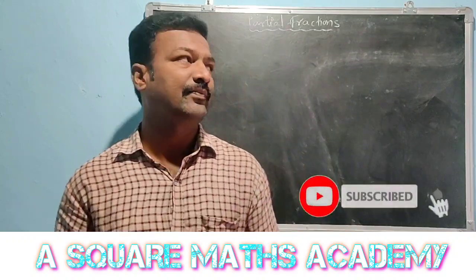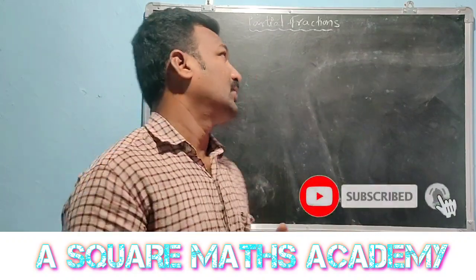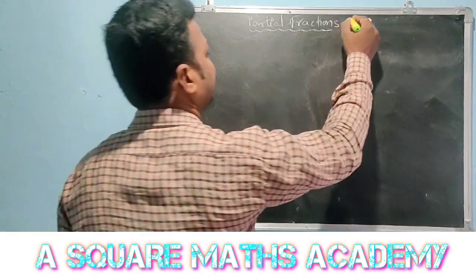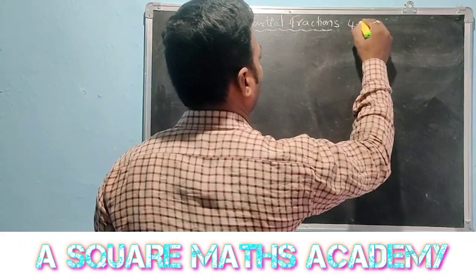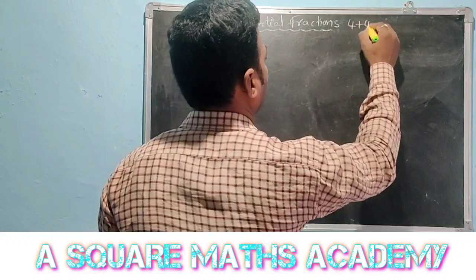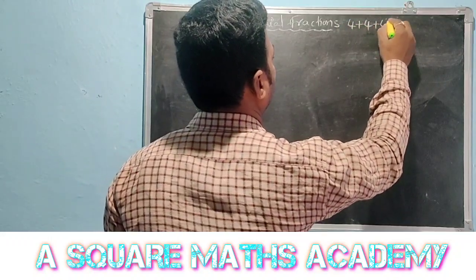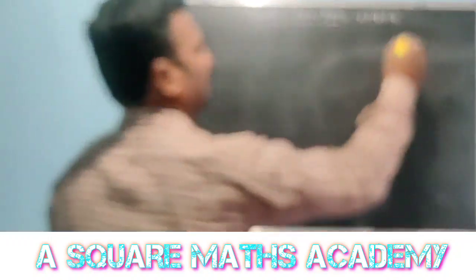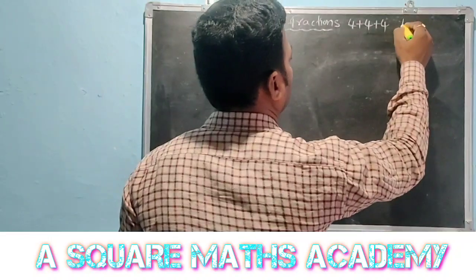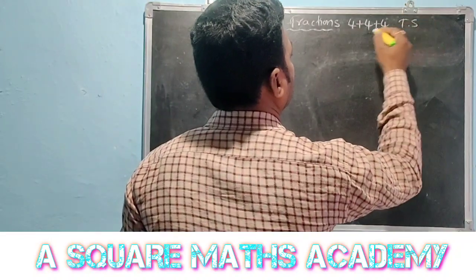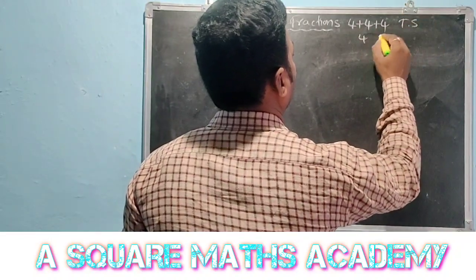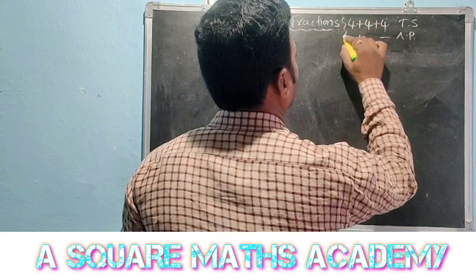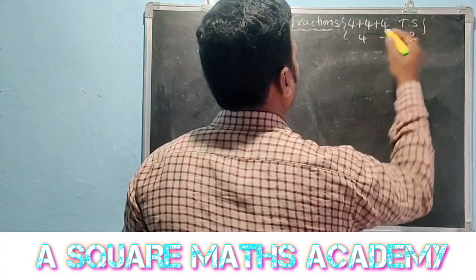In this chapter, partial fractions carry four plus four plus four marks for TS and AP exams — so only four marks per paper.